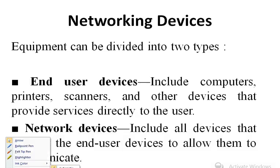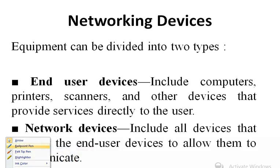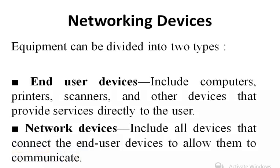Equipment can be divided into two types: end user devices and network devices. End user devices include computer, printer, scanner, and other devices that provide services directly to the user. Network devices include all devices that connect the end user devices to allow them to communicate.